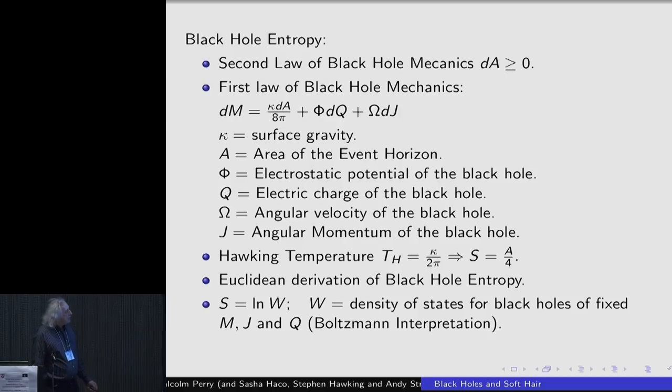So these are sort of circumstantial evidence that there should be some kind of entropy. That was made concrete in two different ways. The first is that Hawking discovered that the temperature of a black hole was equal to kappa divided by 2 pi. And if you believe that that's the temperature, that immediately tells you that the entropy is equal to A over 4.